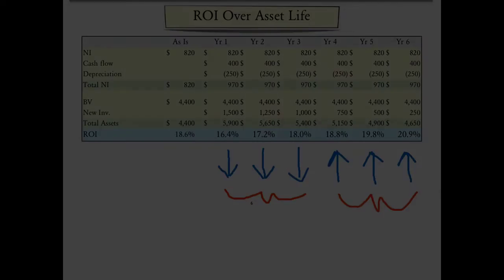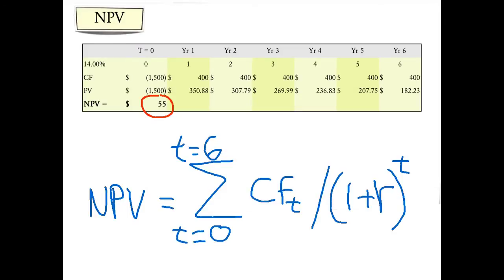If we calculate the net present value of the investment, we see that this is positive, even using the 14% discount rate. So, we know what the manager should do. The question is, will the manager actually undertake the investment if it lowers their reported ROI? The question, of course, depends on what the manager's incentives are and whether ROI is being used to evaluate the performance of the manager.